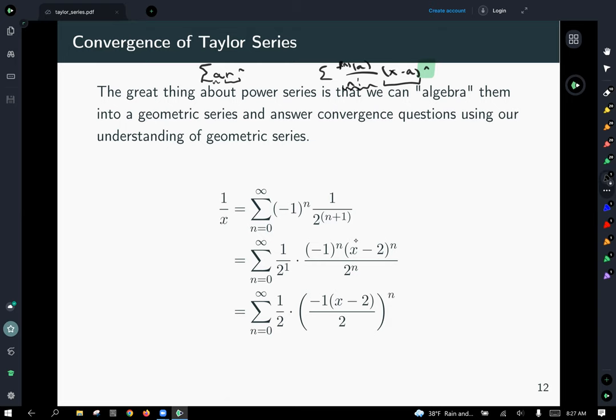So by slapping that negative one into the numerator and breaking up our denominator of 2 to the n plus 1 power as 2 to the n times 2 to the 1 in our second line here. We get a whole bunch of things raised to the nth power, which allows us to do that.